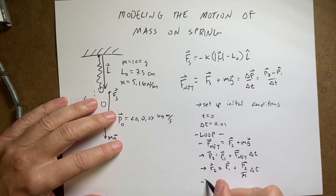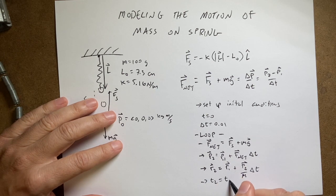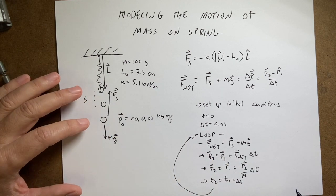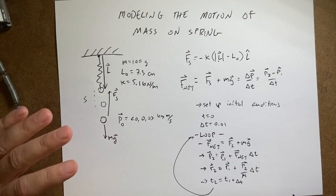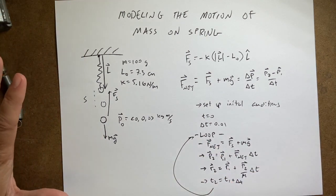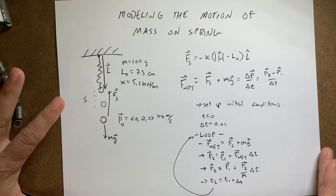And then finally, I'll update time. T2 equals T1 plus delta T. And then I'll go back up here to loop and keep doing that for four seconds or something like that. And that's the idea of a numerical calculation. So I'm going to do that over there. I wanted to get this set up so you can think about how we'd put these equations into Python.